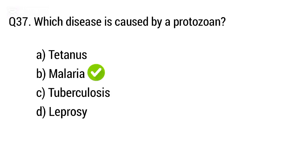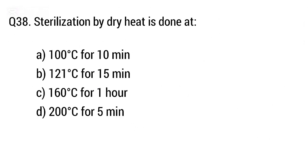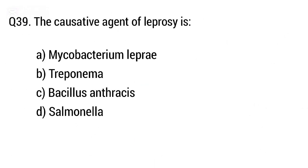Question 38: Sterilization by dry heat is done at. The right answer is Option C, 160 degrees Celsius for one hour.